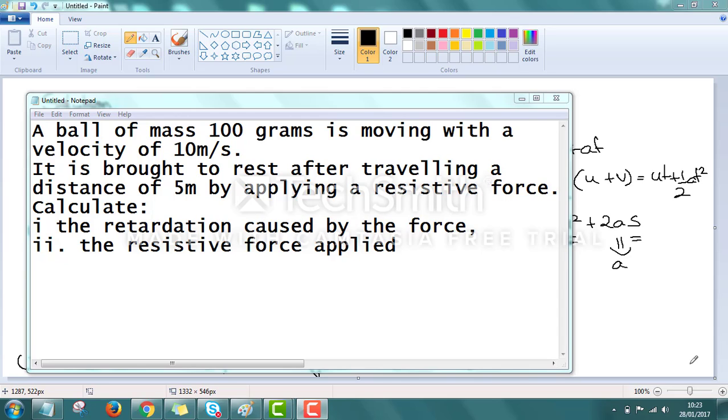Mark the things. First of all, you have to mark the things which are given in the question. First, mass is 100 grams. Second, velocity of 10 meter per second and third, it is shown that it is brought to rest, so final velocity becomes zero and traveling with a distance of 5 meters.